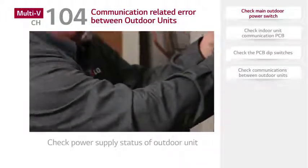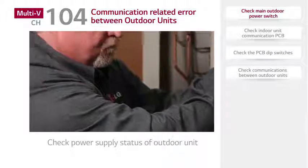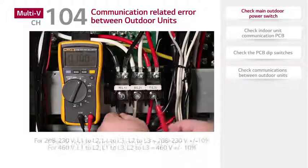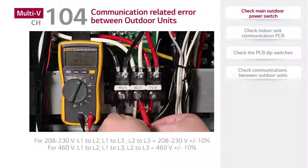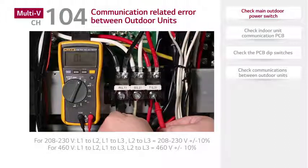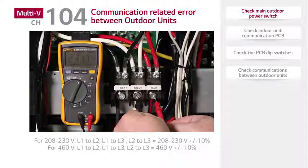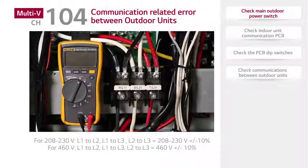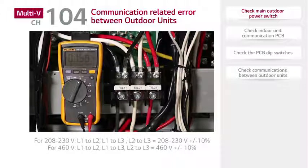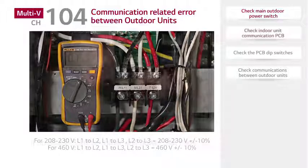The measurements of voltage between phases are as follows. For 208 to 230 volt units, L1 to L2, L1 to L3, and L2 to L3 readings should be 208 to 230 volts plus or minus 10%. For 460 volt equipment, L1 to L2, L1 to L3, and L2 to L3 readings should be 460 volts plus or minus 10%.